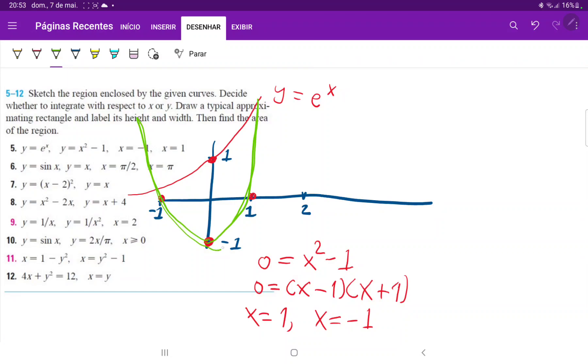It goes like this. We have the line x equals one and x equals negative one. We will restrict the region between these lines.